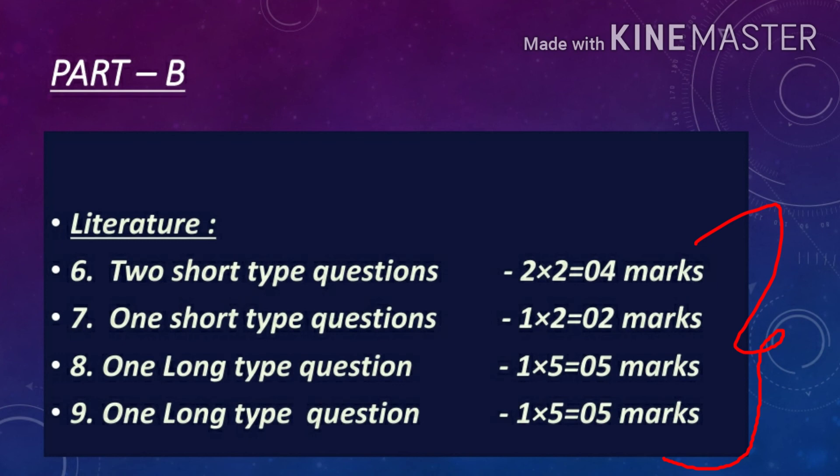Question number 7 is one short type question from prose from your Snapshots book. You have to answer this within 40 to 50 words. Total 2 questions will be there in which you have to attempt only one.